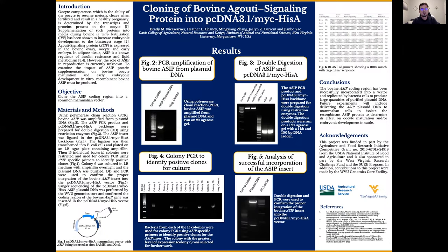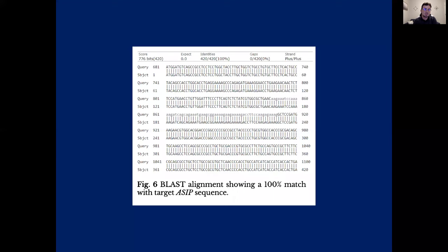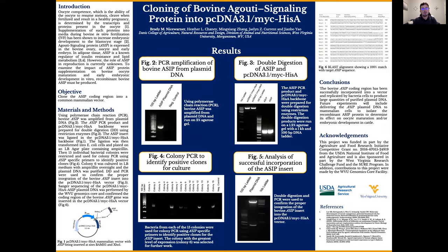However, we wanted to further verify this. Sanger sequencing of the pcDNA 3.1 Myc/His A ASIP plasmid DNA was performed by the WVU Genomics Core and confirmed the coding region was inserted into the vector. The data sent back from the Genomics Core can be seen here — we compared it to the known sequence of ASIP and there was a 100% match. This proves that the bovine ASIP coding region has been successfully incorporated into the vector and replicated by bacterial cells to produce large quantities of purified DNA.